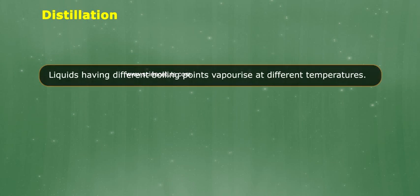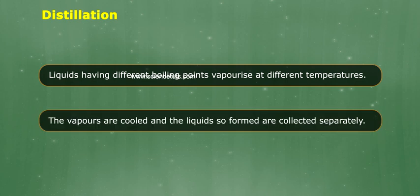Liquids having different boiling points vaporize at different temperatures. The vapors are cooled and the liquids formed are collected separately. For example, chloroform (boiling point 334 Kelvin) and aniline (boiling point 457 Kelvin) are easily separated by the technique of distillation.